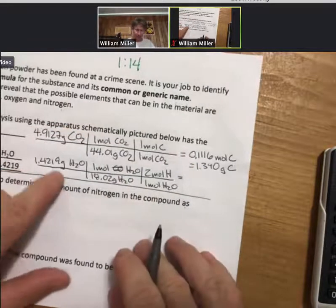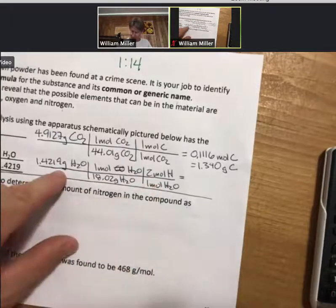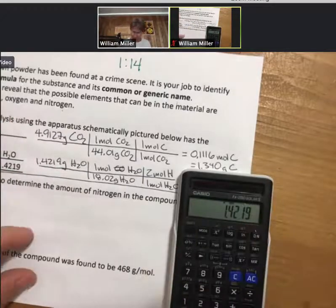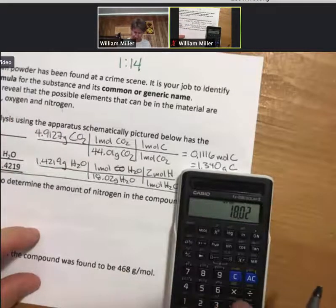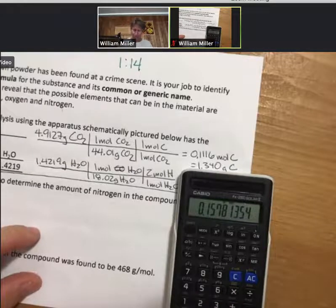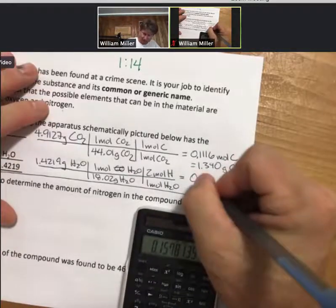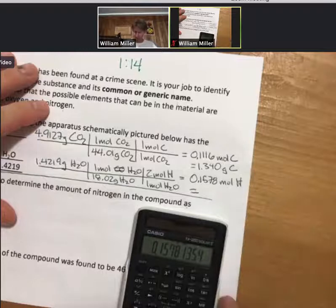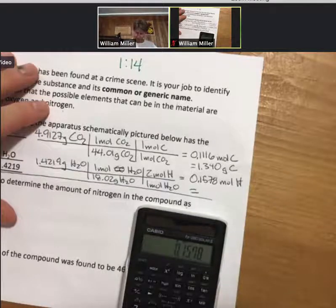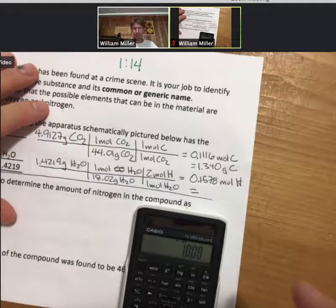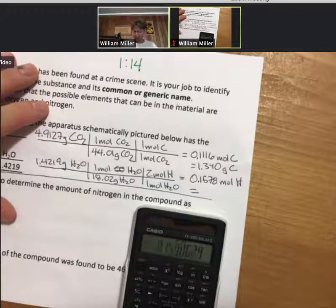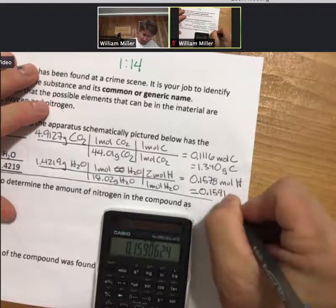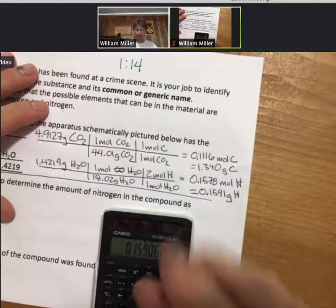Now let's multiply or do the top one. 1.4219 divided by 18.02 times 2, 0.1578 moles of hydrogen. And then 0.1578 times 1.008 for hydrogen, grams per mole of hydrogen, 0.1591 grams of hydrogen.